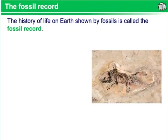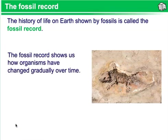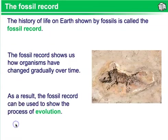The fossil record. The history of life on Earth, shown by fossils, is called the fossil record. The fossil record shows us how organisms have changed gradually over time. As a result, the fossil record can be used to show the process of evolution.